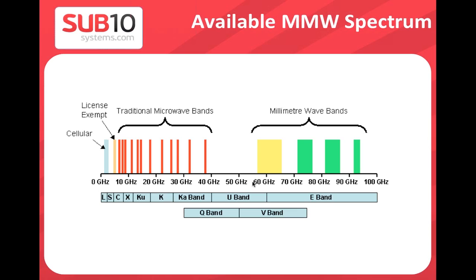Looking at the spectrum graph, you can see traditional microwave, unlicensed bands at 2.4 and 5 GHz, and in millimeter wave the yellow area around 60 GHz — called V-band. Then there are three green bands in E-band at 70, 80, and 90 GHz already allocated in regulations. Today's systems mainly use 70 and 80 GHz. High-frequency systems were very expensive, but as production scales up, prices are dropping dramatically.